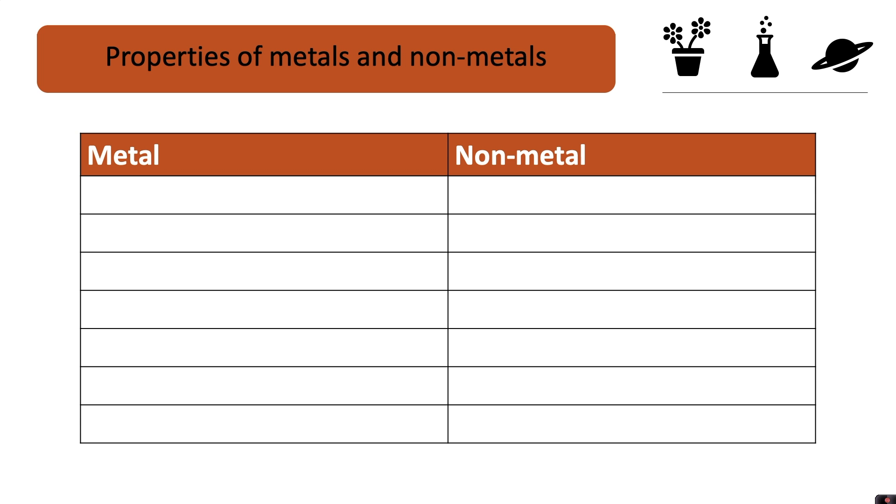All of the metal elements have similar properties to each other and in the same way all of the non-metal elements have similar properties with each other. We're going to go through the general properties of metals and non-metals.